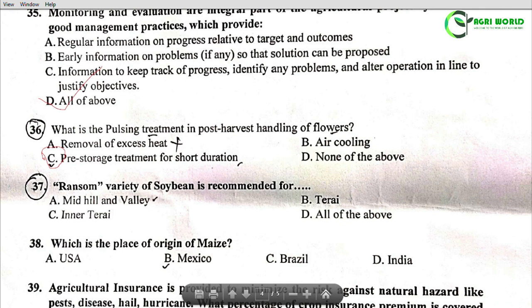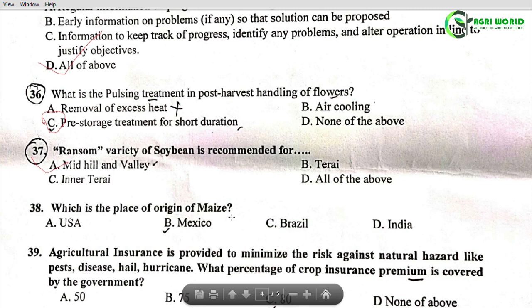Question 38: Which is the place of origin of maize? Options: USA, Mexico, Brazil, India. The correct answer is Option B: Mexico.